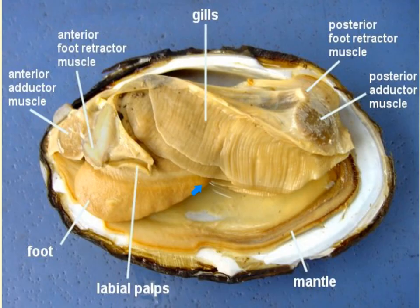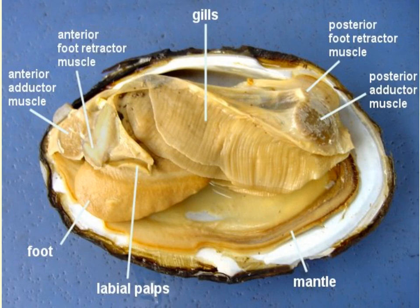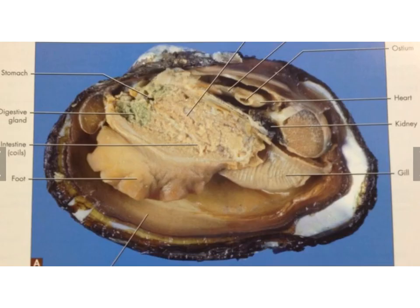We're going to take our scalpel and come right along here, making an incision and moving backwards. We're going to remove the gills out of the way and open up this area so we can see some additional internal structures of the clam. Just to orientate ourselves: we do have the lower gill, but the upper gill has been removed. Here was the foot area. We've opened up this area, and this is going to allow us to see some of those internal organs associated with the clam.